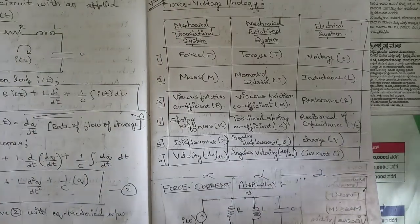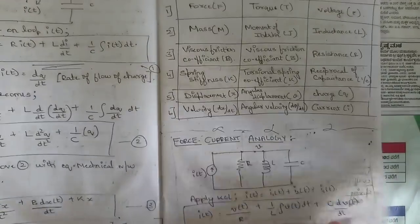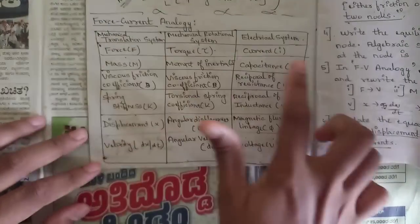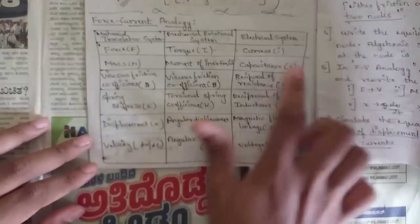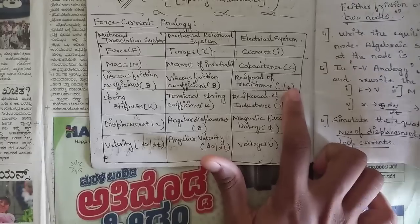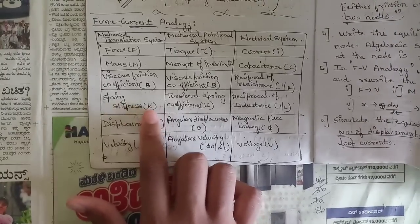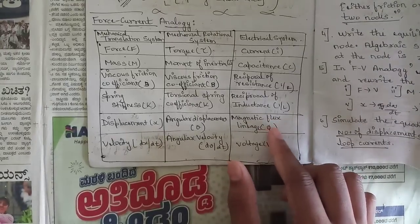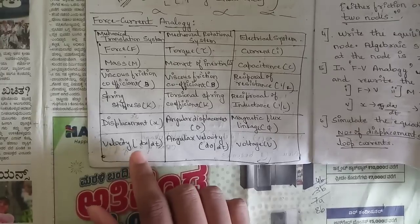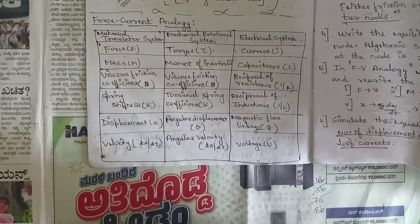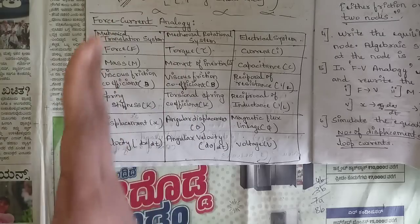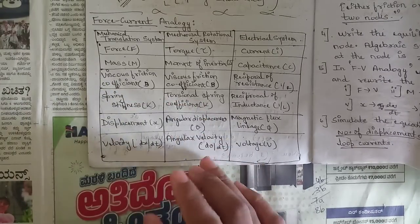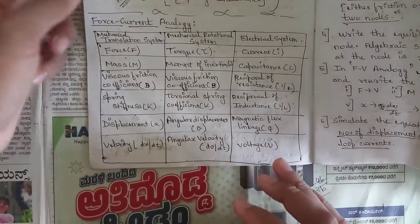In force-current analogy: force is replaced by current; mass is replaced by capacitance; friction B is replaced by reciprocal of resistance (1/R); spring stiffness K is replaced by reciprocal of inductance (1/L); displacement is replaced by magnetic flux linkage φ; and velocity dx/dt is replaced by voltage. In rotational systems, the corresponding quantities are angular displacement, angular velocity, torque, and moment of inertia.